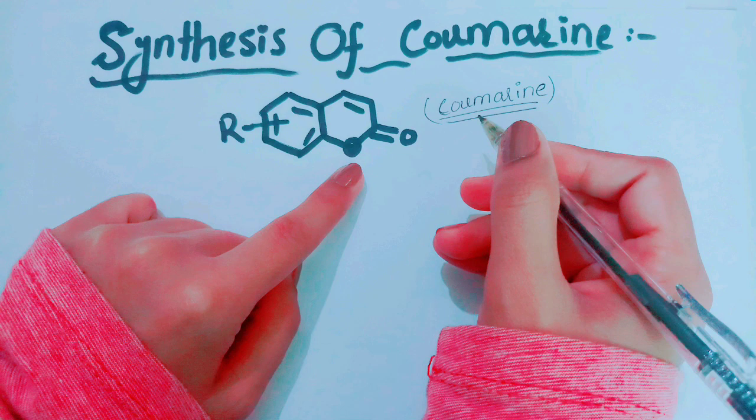Hi guys, welcome back to my channel. Once again I am with you with the detailed mechanisms of coumarin natural product and also the synthesis of its derivatives. Coumarin, or 1,2-benzopyrone, is the lactone of o-coumaric acid. It is a natural compound that occurs in many plants, microorganisms, and few animals, and is distributed in many plant families.